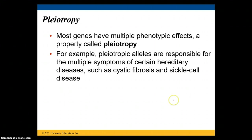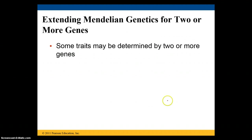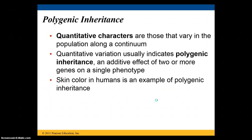Pleiotropy is a situation where one gene has multiple phenotypic effects. Cystic fibrosis and sickle cell disease are examples caused by pleiotropy, where genes have multiple effects, not just one. Some traits are inherited by two or more genes, which is called polygenic inheritance — 'poly' meaning more than one. Quantitative characters that vary along a continuum in a population indicate polygenic inheritance through an additive effect.